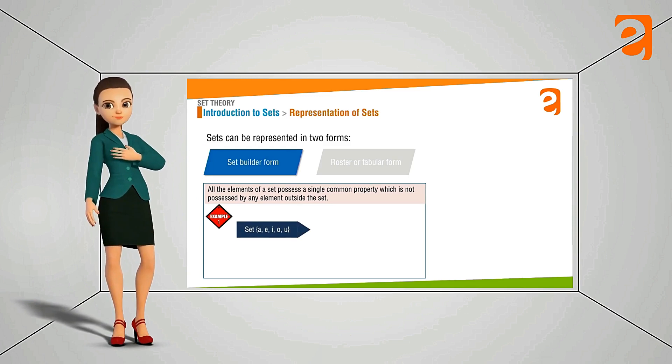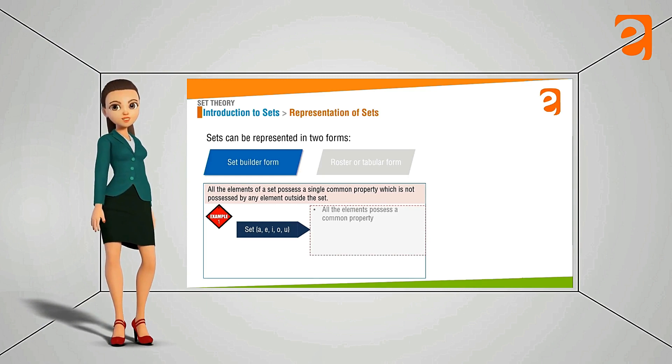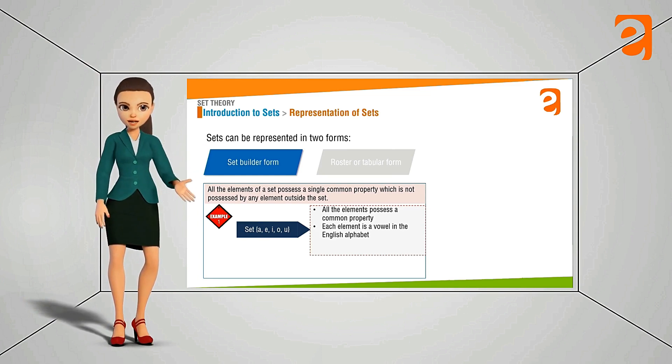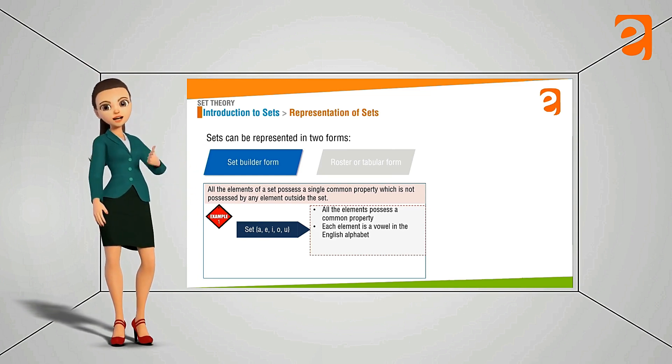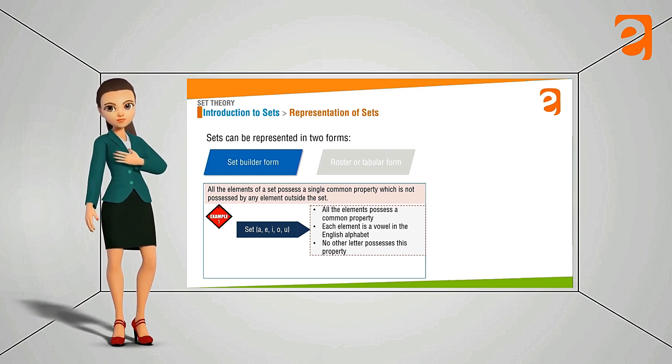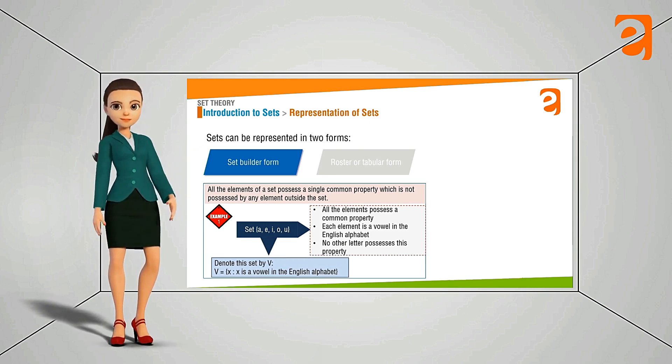For example suppose you have the set A, E, I, O, U. What is the common property possessed by the set? The common property is that these letters they are vowels. And none of the element in the set is not a consonant. This means that no letter other than vowel is considered here in this set. So we can write this set in the set builder form as like this. V is equals to X such that X is a vowel in the English alphabet.